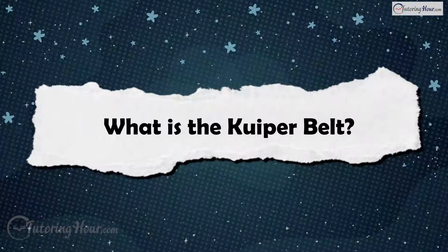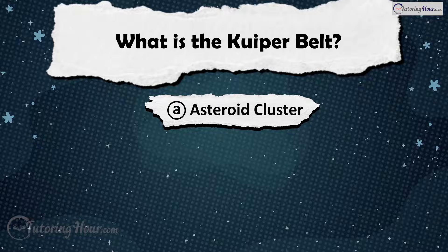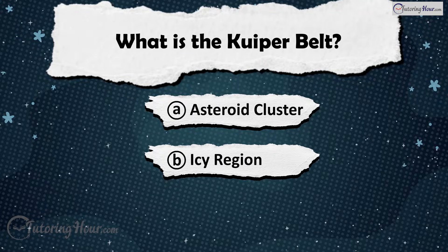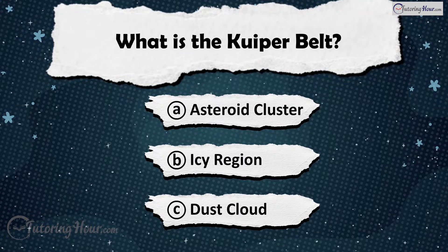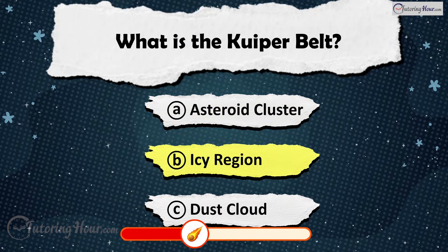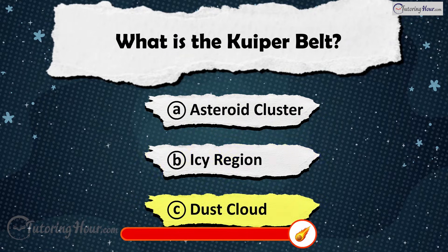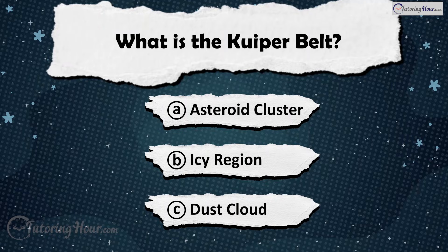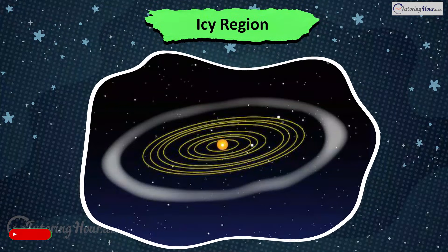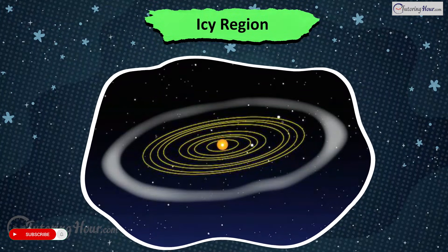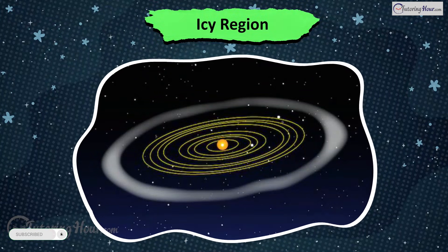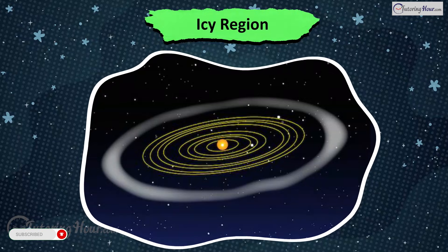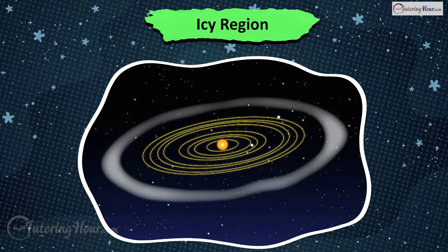What is the Kuiper Belt? Is it A) Asteroid Cluster, B) Icy Region, or C) Dust Cloud? The answer is Icy Region. The Kuiper Belt is a region of icy bodies beyond Neptune's orbit, including dwarf planets like Pluto.